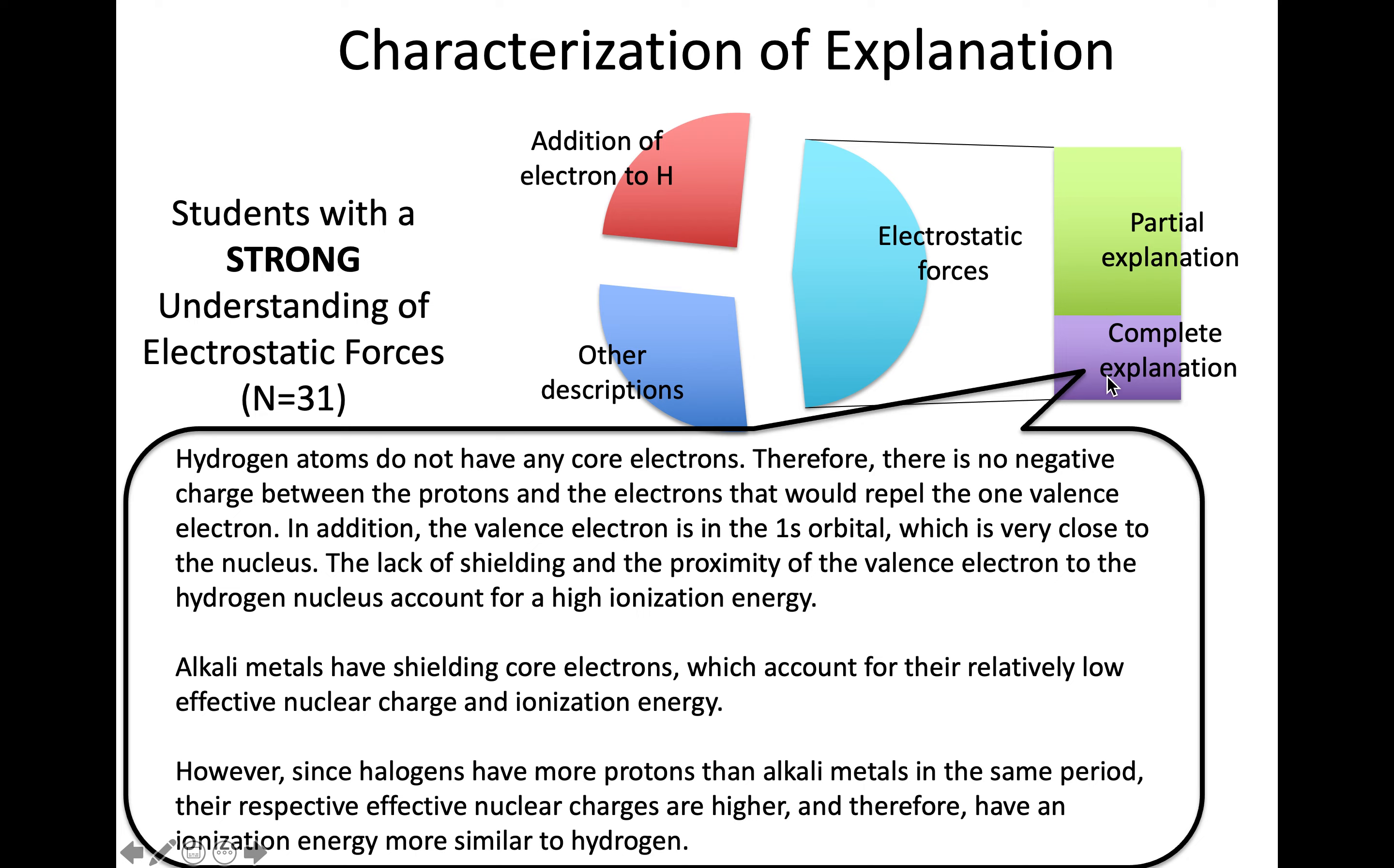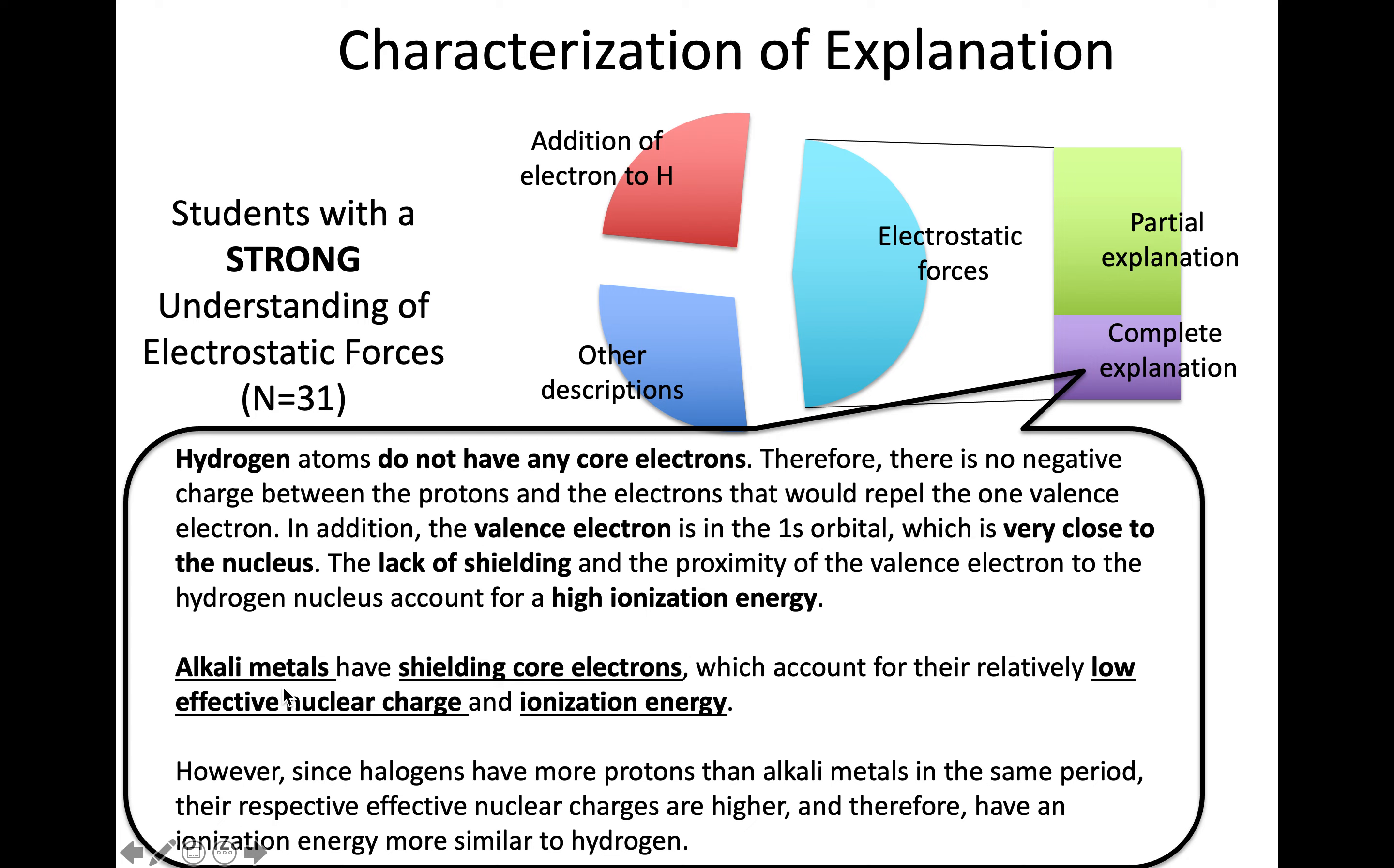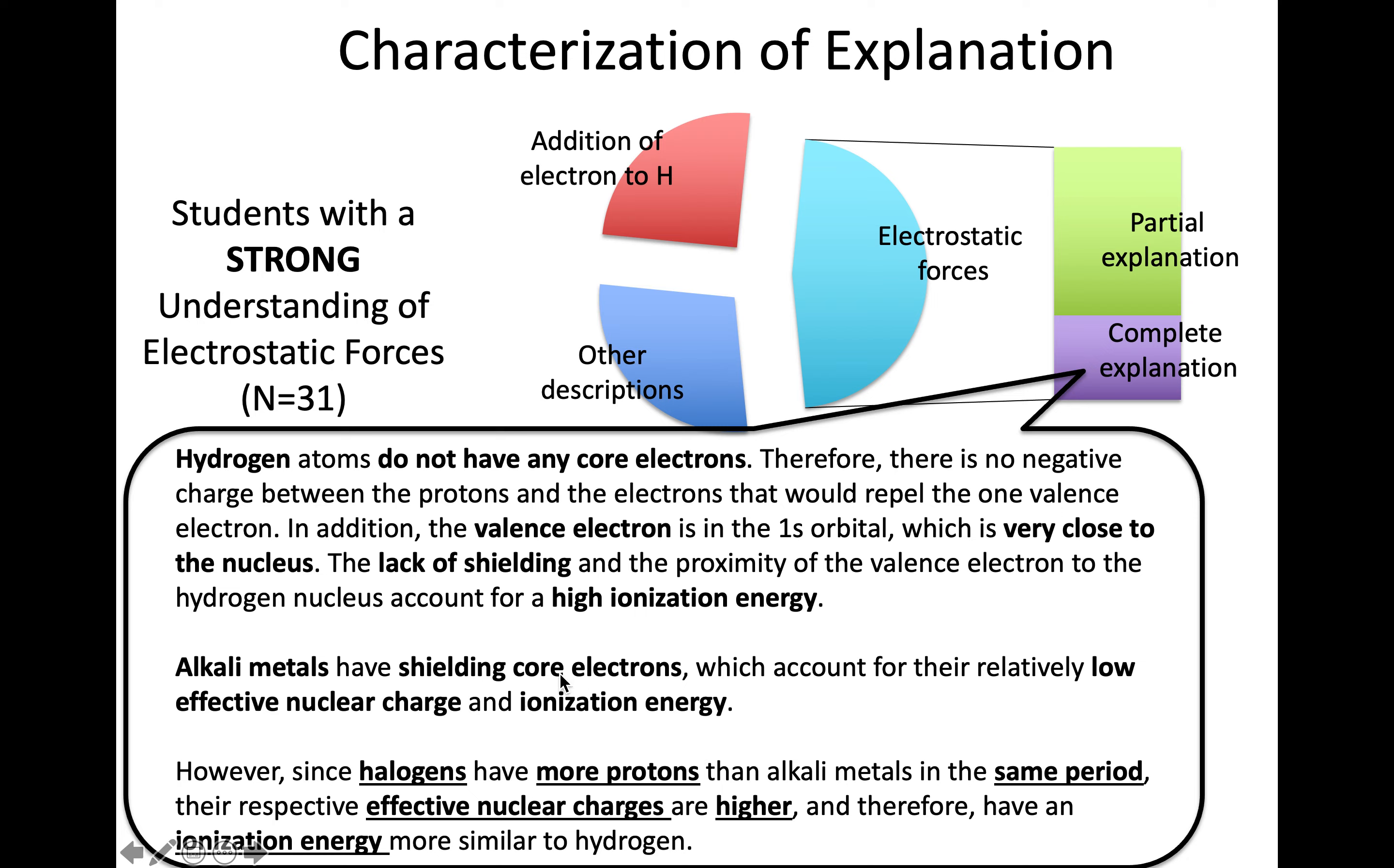What do I mean by a complete explanation? Here's a very complete explanation a student offered. I see a description of hydrogen with the valence electron found close to the nucleus, lack of shielding, and how this leads to high ionization energy, contrasted with the alkali metals, then describing in the same terms of effective nuclear charge the high ionization energy for halogens. Very complete explanation throughout.